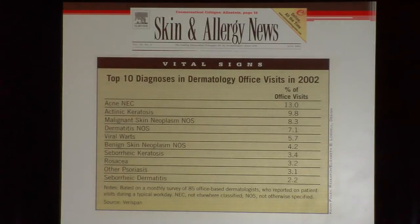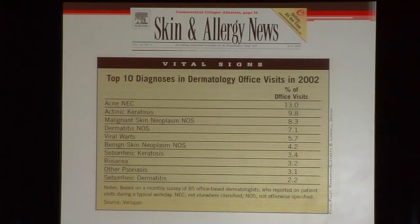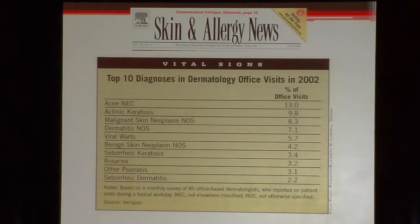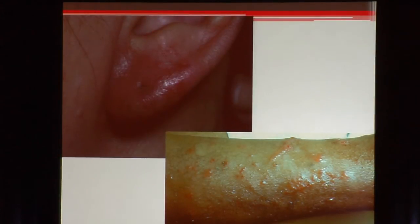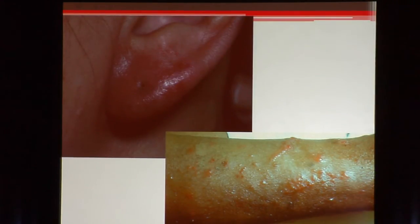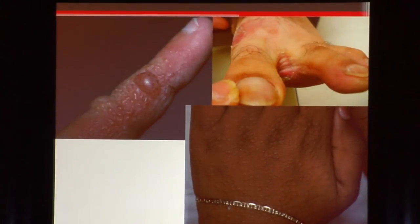Quite a bit of time ago, there was a little study in Skin and Allergy News showing the top 10 diagnoses in dermatology offices — they did about 85 different offices. For inflammatory dermatoses, you need to keep them in mind because they're about a third of the cases presented. This was actually a nickel allergy, and this is linear vesicles of poison oak.